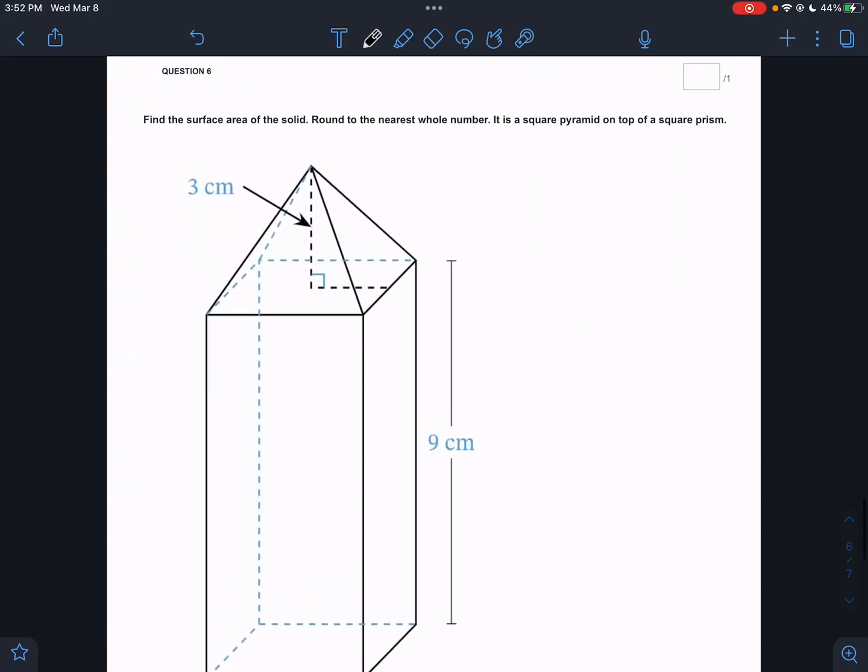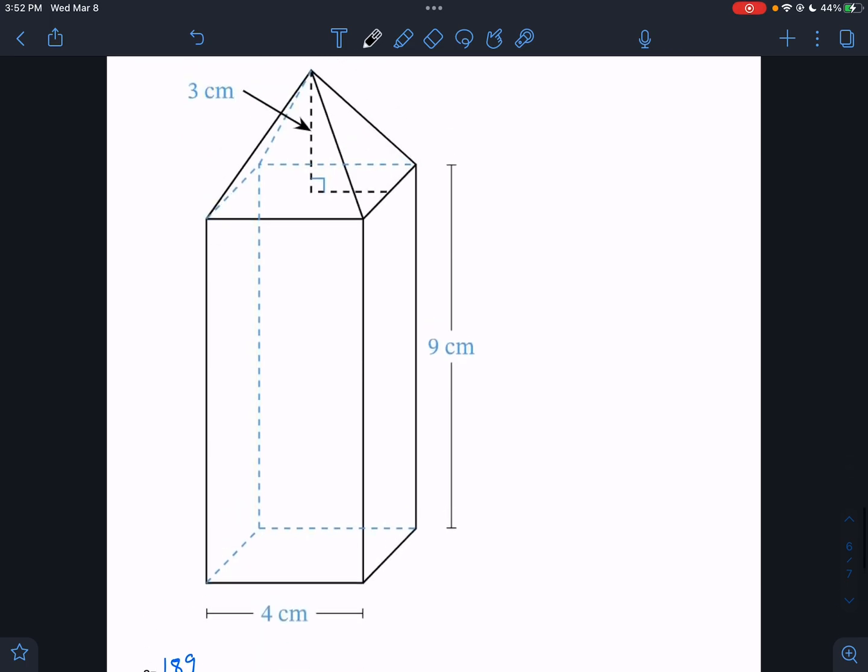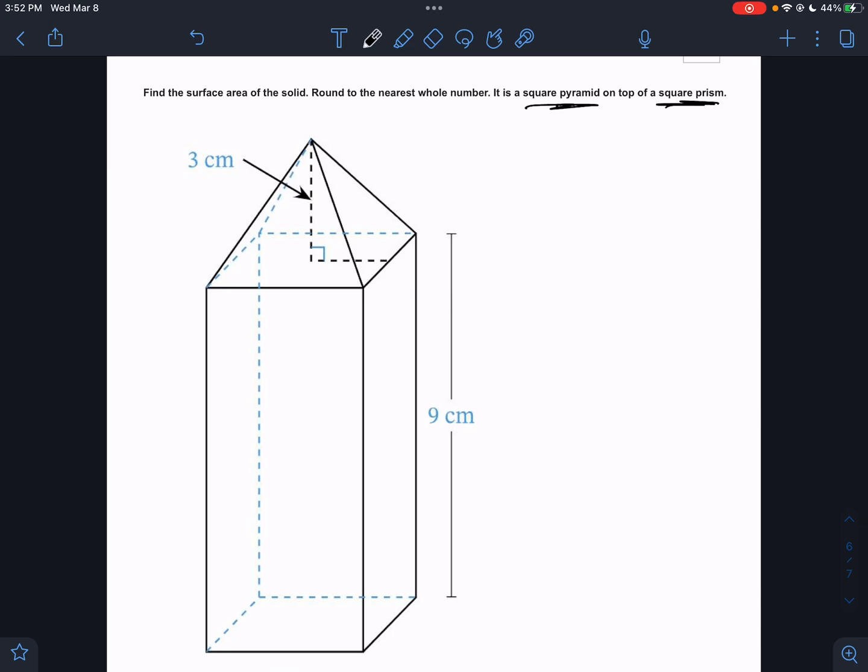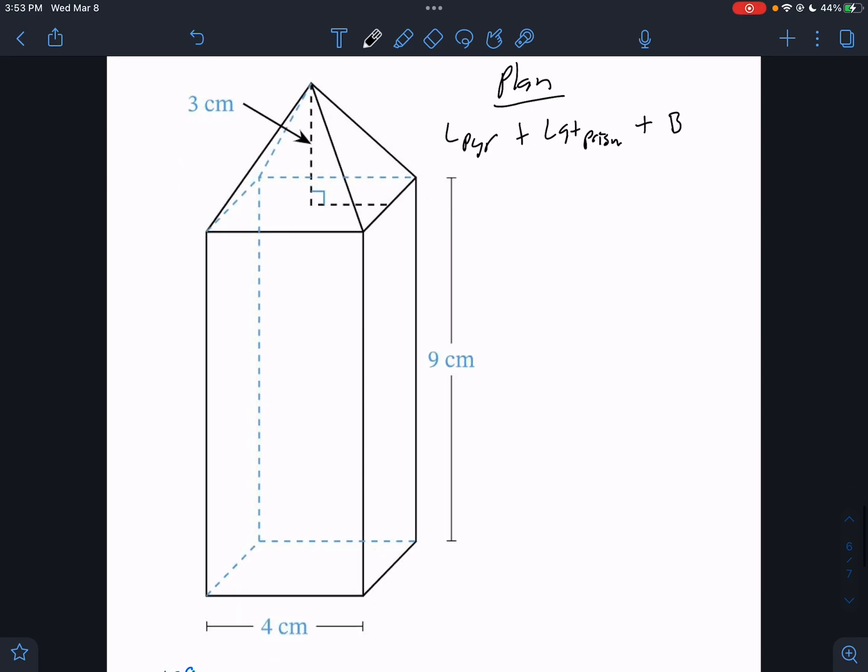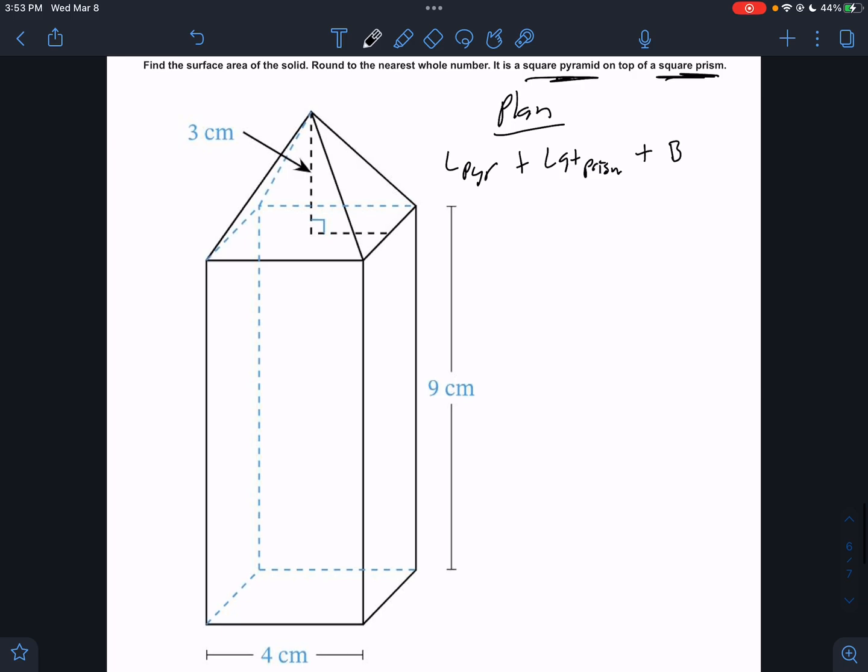And then we're going to find the surface area of this solid. It says round to the nearest whole number. It is a square pyramid on top of a square prism. Square prism doesn't mean cube. It's a prism with squares as your base. And I want the surface area. So I'm going to start with the – what are we actually having to do? What would be the plan? So my plan here would be the lateral of the pyramid plus the lateral of the prism plus one base. The only visible base is the bottom there. So to do that, the lateral of the pyramid would be one-half PL plus the lateral of the prism would be PH plus the base. So we need P, B, L, and H for different things.